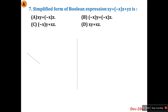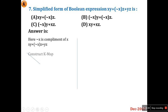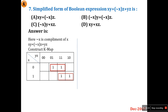Question number seven: the simplified form of the Boolean expression xy + x'z + yz — where x' means complement of x — given options include xy + x'z. Let's construct the K-map to solve it. The K-map has axes for x and y. xy is 1, and x'z and yz are also plotted on the K-map.